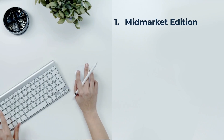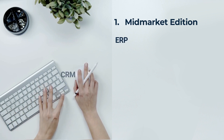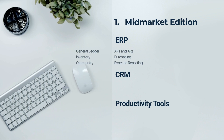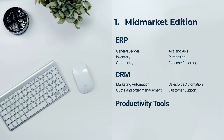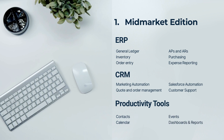The NetSuite Mid-Market basic editions include ERP, CRM, sales force automation, and productivity tools. ERP covers general ledger, inventory, order entry, accounts payable and receivable, purchasing, and expense reporting. CRM includes marketing automation with campaigns, quote and order management, salesforce automation, and customer support. Productivity tools include contacts, calendars, events, and real-time dashboards. With any NetSuite edition, you get 120,000 campaign emails per year and 100 gigabytes of file cabinet storage.